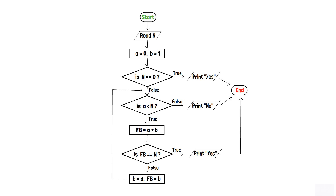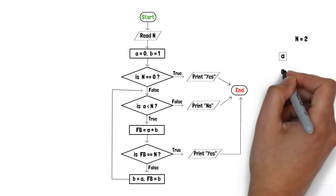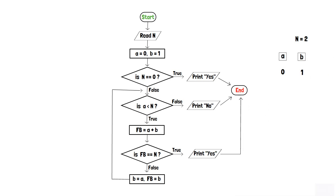Now let's dry run the program by considering n equals 2. First, variable a is assigned 0 and variable b is assigned 1. Since 2 is not equal to 0, the condition in the first decision box is false. Since a (which is 0) is less than 2, the second decision box condition is true, so fb equals a plus b, which is 0 plus 1 equals 1. Since 1 is not equal to n (which is 2), the last decision box condition is false.